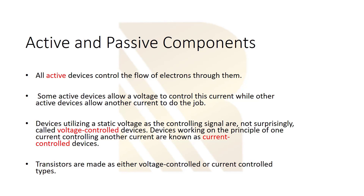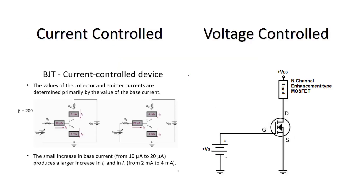Transistors can be one of two types: voltage-controlled or current-controlled. A BJT transistor is current-controlled — if we change the base current, we change the collector current. We control IC using IB, which is why we call it current-controlled. A MOSFET, on the other hand, is voltage-controlled — when we change the gate voltage, the current passing through the transistor changes. We control the current by tuning a voltage, which is why we call this voltage-controlled.